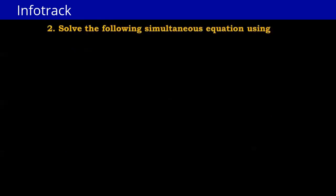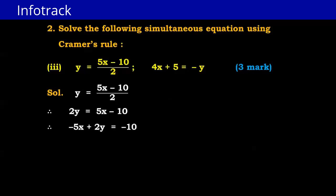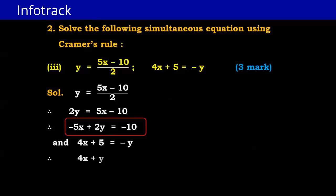Next, question 3: y = (5x − 10)/2 and 4x + 5 = −y. We write these in standard form. By cross multiplication, 2y = 5x − 10, so −5x + 2y = −10 is the first equation. The second equation, 4x + 5 = −y, gives 4x + y = −5.